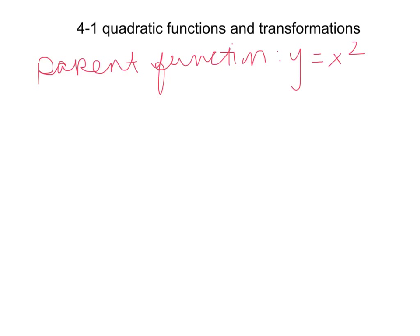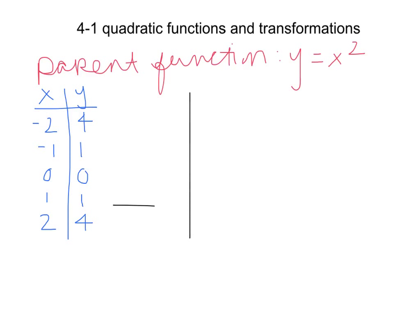Anything squared is going to be quadratic. I am going to make a table of values so we can find out what our parent function looks like. I want to plug in some negative numbers and some positive numbers. If I plug in negative 2 for x, negative 2 squared gives me positive 4. Negative 1 squared gives me positive 1. 0 squared is 0. 1 squared is 1. 2 squared is 4.